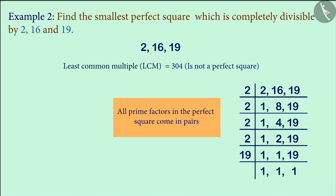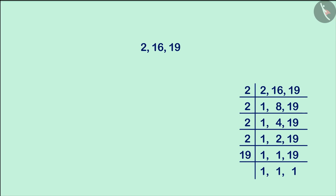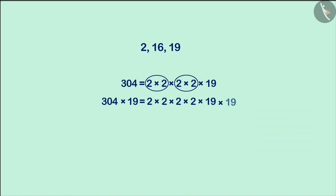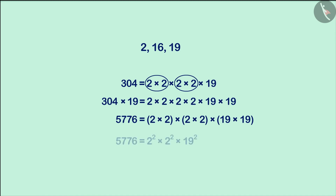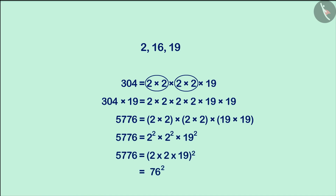We know that all prime factors in a perfect square come in pairs. In the prime factorization of the number 304, only the number 19 is not in a pair. If we multiply both sides by 19, we get the number 5776 on the left-hand side, which is a perfect square. We can also see its prime factors on the right-hand side, where all prime factors are in pairs.